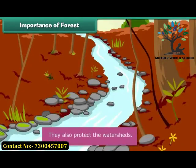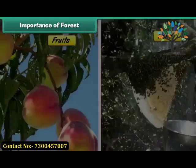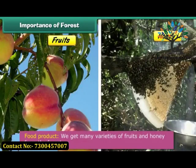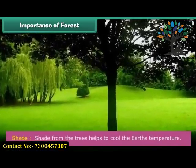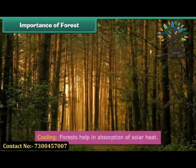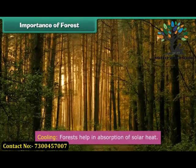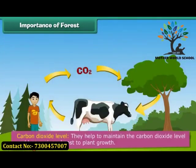Forests improve water quality by slowing and filtering rainwater and also protect watersheds. We get timber from forests to build furniture, ships, and houses. We get many varieties of fruits and honey from the forest. By cooling the air and ground around them, forest trees help cool the earth's temperature. Forests also help in absorption of solar heat during evaporation and transpiration.